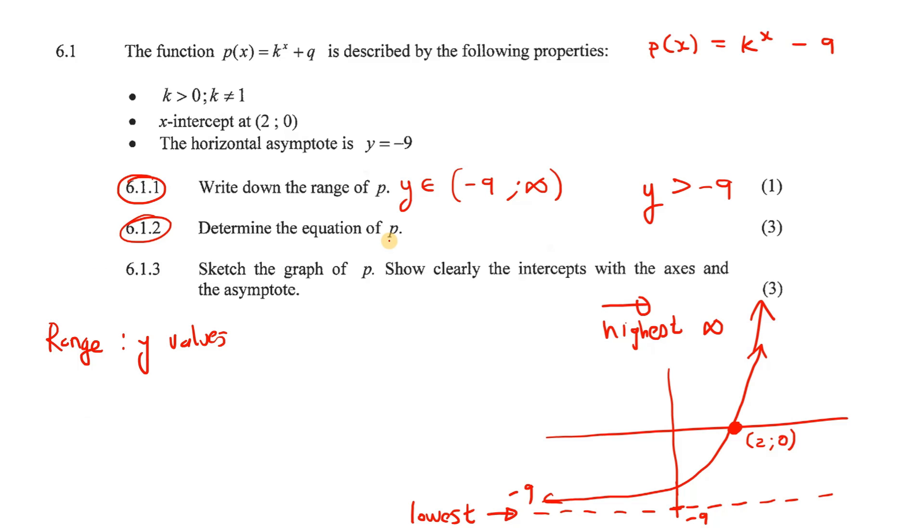The next question says, determine the equation of p. Well, we only have one more letter that we need to find. Because remember, p(x) actually just means y. And so y and x, we can fill in using a point on the graph. Because this is an x, and this is a y. So we can go fill those in. And then you see we only have k that we need to solve.